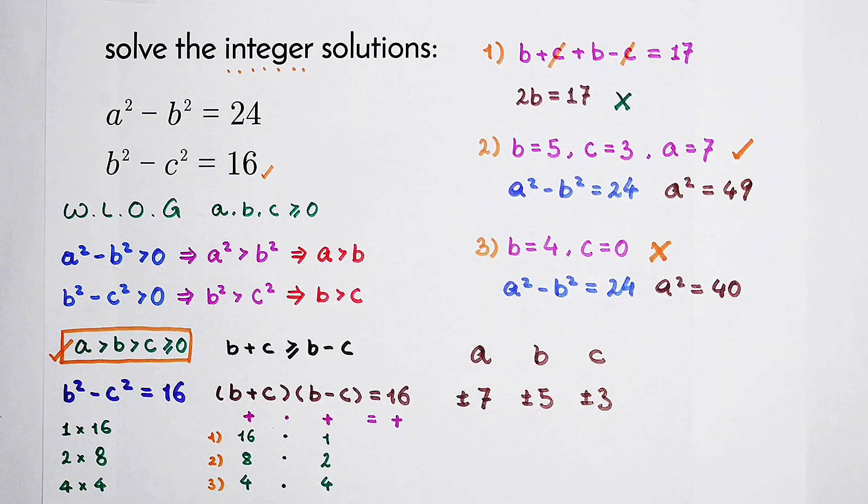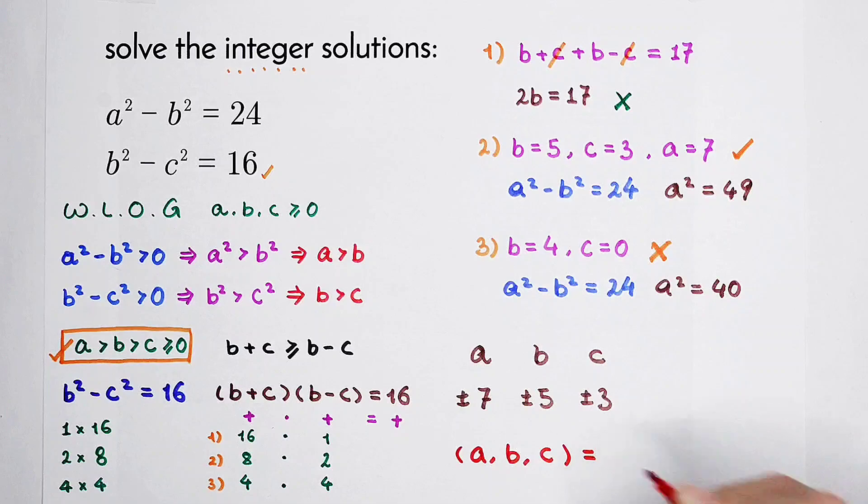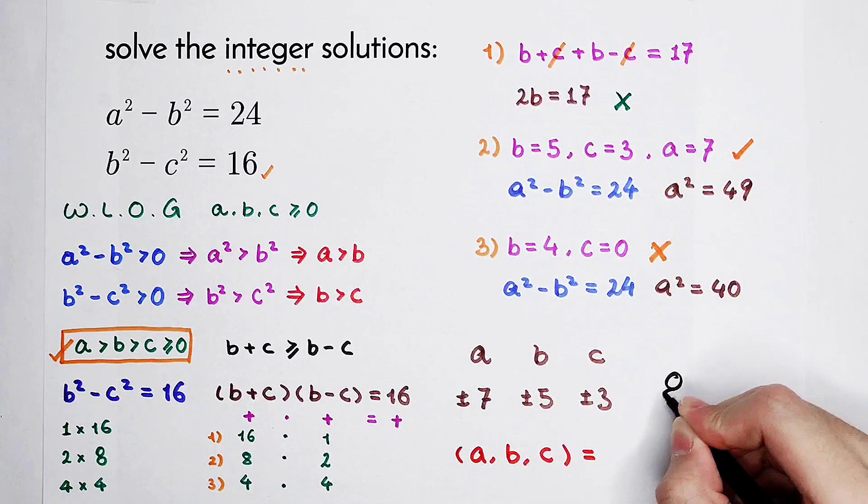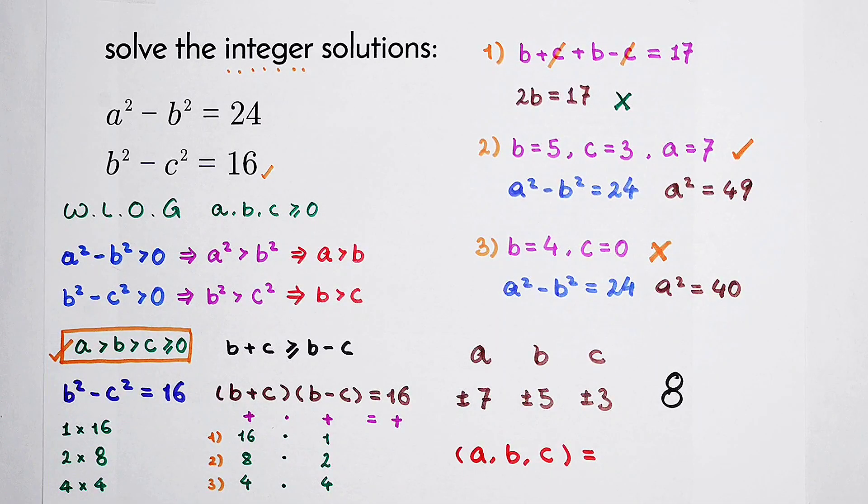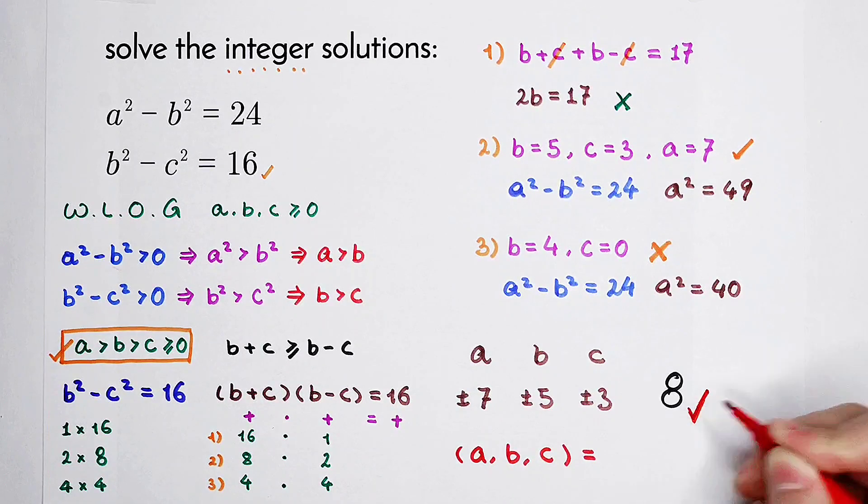So how many solutions are there? Or how many solution pairs are there? There are 8 pairs of solutions, 8 in total.